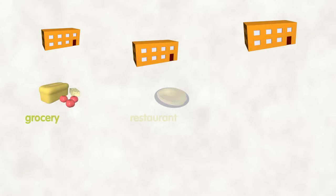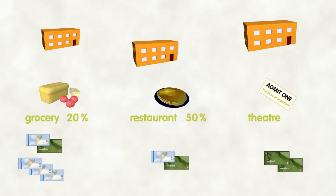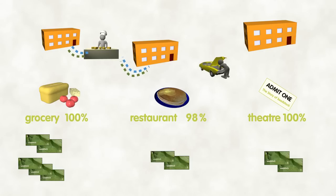Depending on their costs and how much of their spending they do locally, businesses will accept payment in Seedstock at different proportions. For example, a grocery store would accept 20%, a restaurant 50%, and a theater up to 100% payment in Seedstock. The more local businesses participate in Seedstock, the more useful Seedstock will become, and the more Seedstock businesses will be able to accept. This is a sign of a thriving local economy.